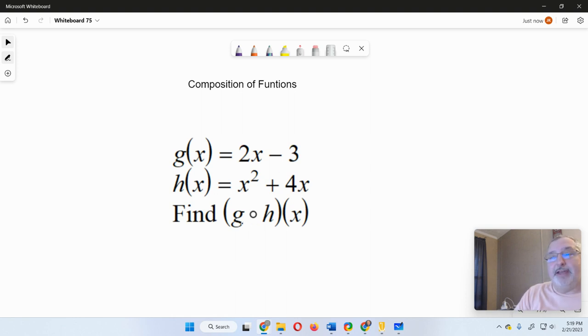You have to understand how to read this. This means g of h of x. So that means I'm going to take the g function, and I'm going to insert the h of x function into it. So here in this case, I'm taking this, and I'm filling in where x is, and then simplifying. So here I've got 2x minus 3.